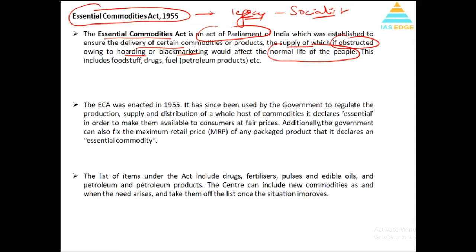The supply of essential commodities is very important. What happens is demand grows and supply is less — then producers, wholesalers, and retailers hold the commodity and increase prices, manipulating people because they know they can earn huge money. So this act discourages black marketing. It basically includes foodstuffs, drugs (medicines), and fuel/petroleum. It was enacted in 1955.